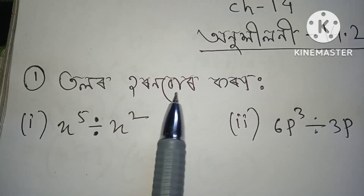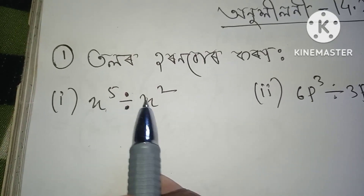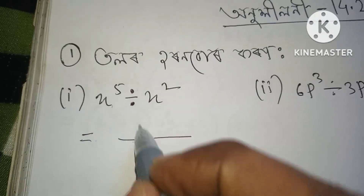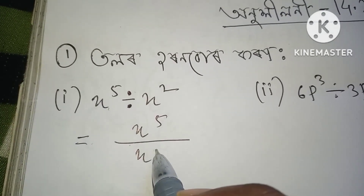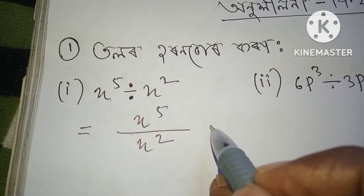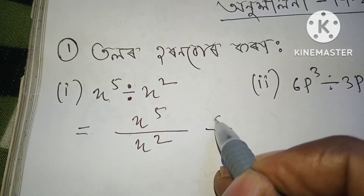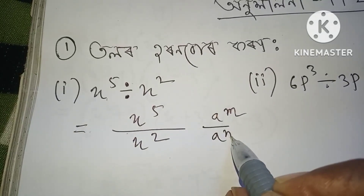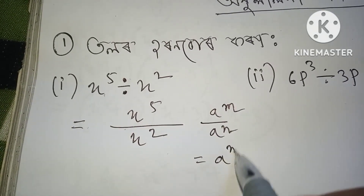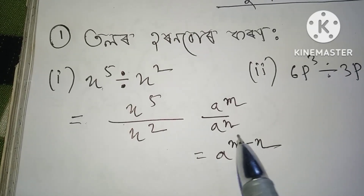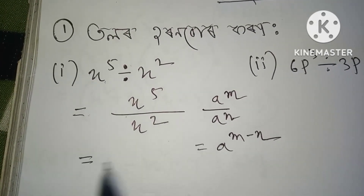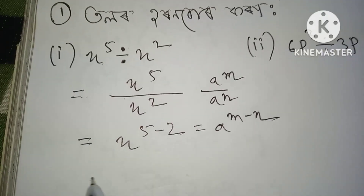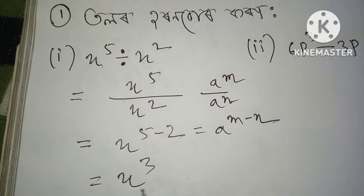Question number one: x to the power 5 divide x to the power 2. x to the power 5 minus 2 equals x to the power 3.